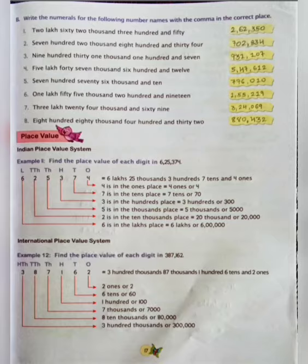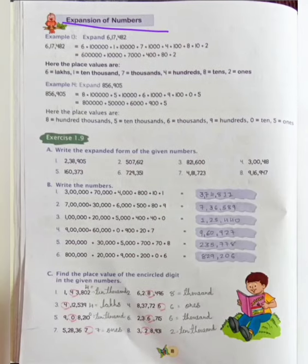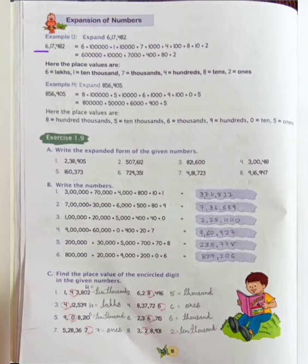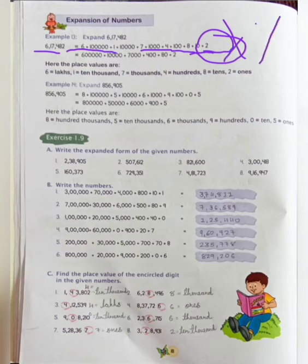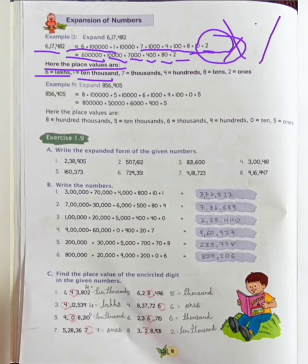Let's move to the next page. Expansion of numbers. Example 13: Expand 6,17,482. So we write: 6 multiplied by 1 lakh, plus 1 multiplied by 10,000, plus 7 multiplied by 1,000, plus 4 multiplied by 100, plus 8 multiplied by 10, plus 2 multiplied by 1. Our expansion of this number is: 6,00,000 plus 10,000 plus 7,000 plus 400 plus 80 plus 2.